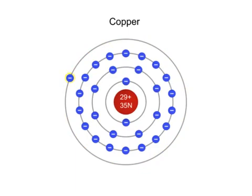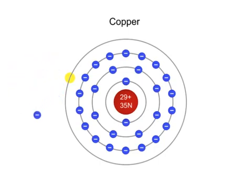The lone electron is loosely held in its valence orbit and thus can become a free electron. The ability of this electron to freely move away from its nucleus gives the copper atom its current carrying capacity.